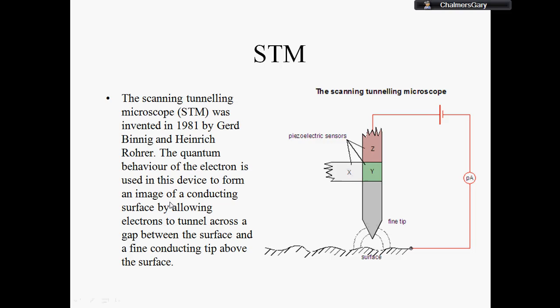The scanning tunneling microscope was invented in 1981 by Gerd Binning and Heinrich Rohrer. It uses quantum behavior of electrons to actually build up an image.